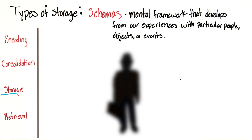Let's say you have a schema of a college professor — that is, you have a conceptual idea of what a professor looks like. Perhaps whether they're a man or a woman, how old they are, how tall they are, or how they dress.